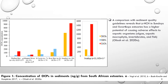This is another graph showing the concentration of OCPs in sediment from South African estuaries. Analysis of OCPs in sediments has only been conducted in six estuaries in South Africa: Swartkops, Sundays, Kosi Bay, St. Lucia, Umgeni River and Durban Bay. A comparison with sediment quality guidelines revealed that gamma-HCH (lindane) in Sundays and Swartkops estuaries has a higher potential of causing adverse effects to aquatic organisms, including fish, algae, aquatic macrophytes and other invertebrates.